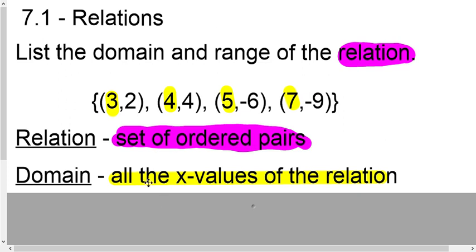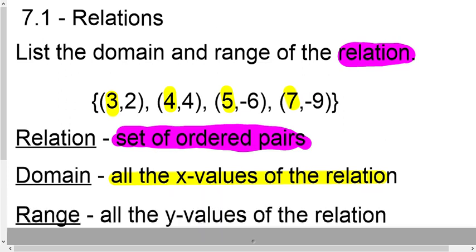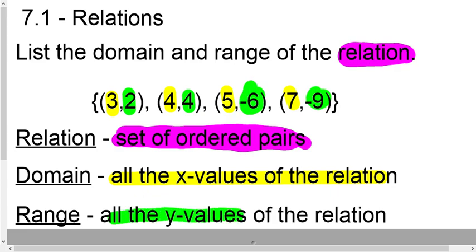When we take a look at the range, the last thing we need to do there is be able to take a look at the y values. So 2, 4, negative 6, and negative 9. Those are our y values. So when it says what's the range, it's our y values. When it says what's our domain, basically it's the x values.